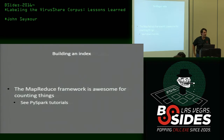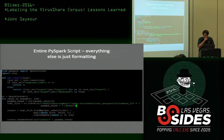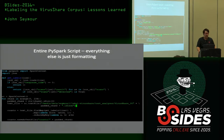This is called an inverted index. The way you do it is basically by counting things. The MapReduce framework is awesome for this. The PySpark initial tutorial is exactly this problem, so it works out well — especially since I wanted to learn PySpark. This ends up actually being the entire script — about 20 lines of code, everything else is just formatting. It's actually more work to install PySpark than to actually use it.